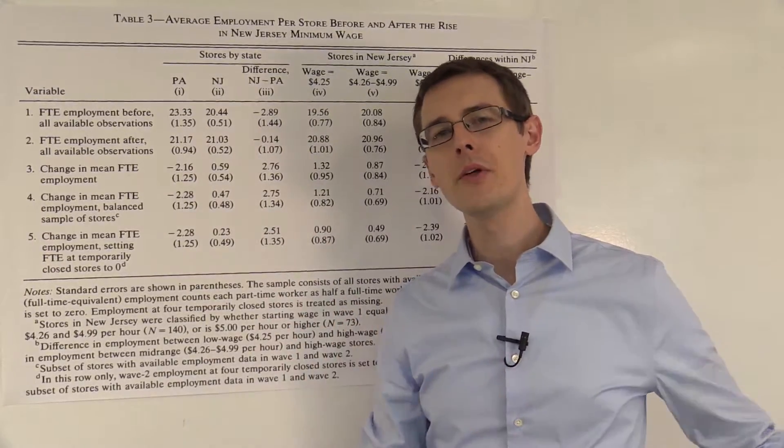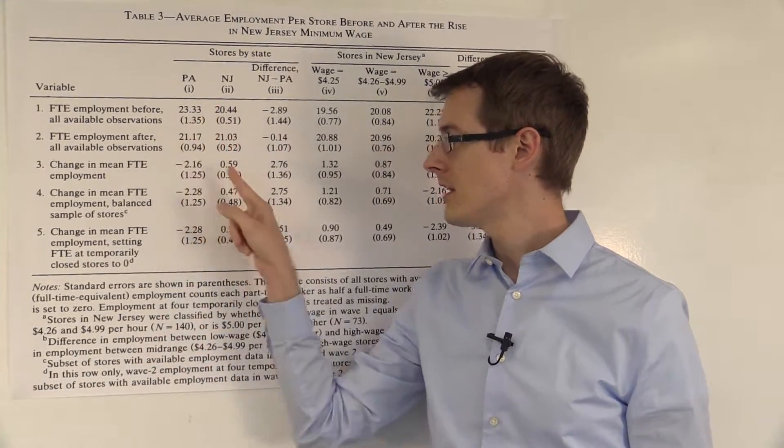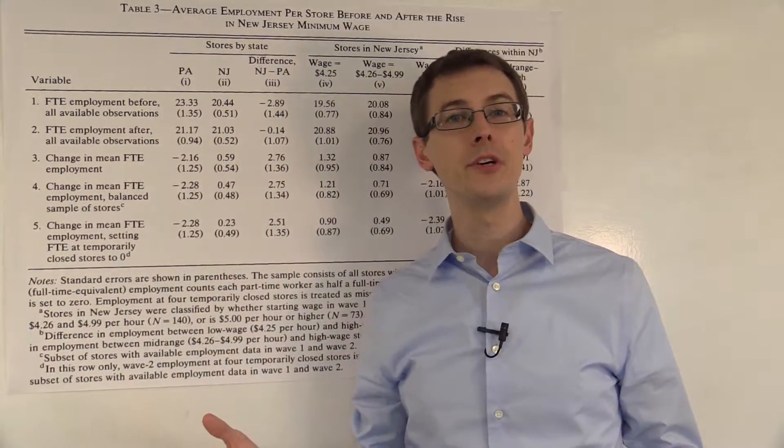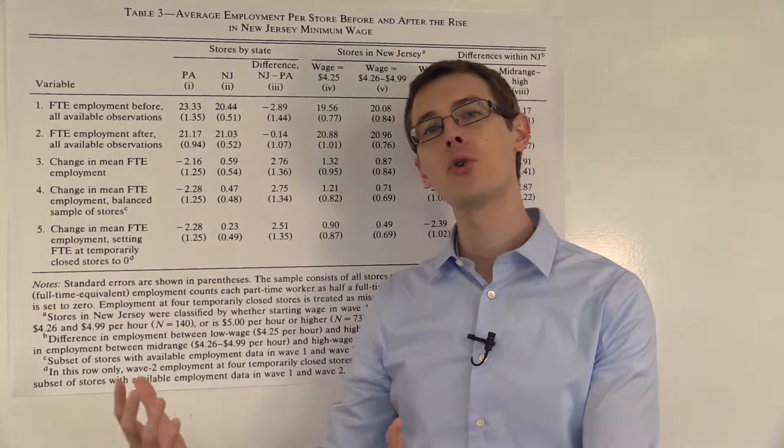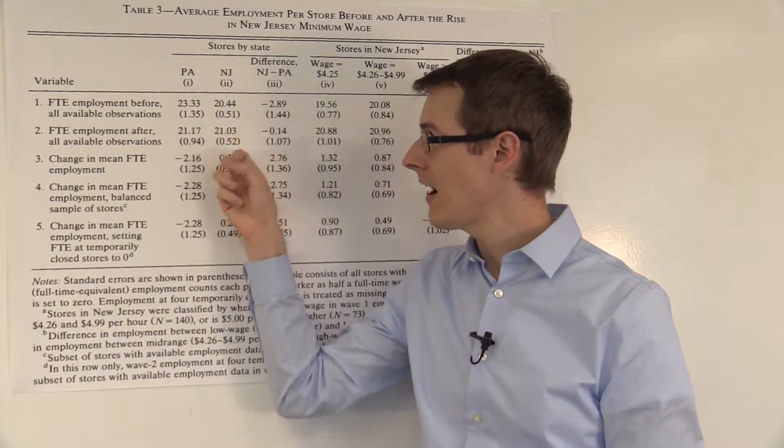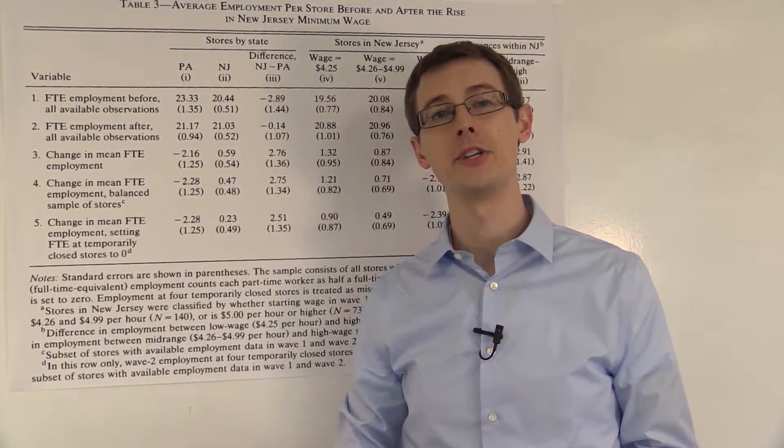But as we've discussed before, maybe there are some other trends, some other variables that are changing over time that would explain this difference of 0.59 workers. So what are we going to do? We need to find some control group that we can get the common trend from and extract out the common trend here so that we're left with just the effect of treatment, the effect of the minimum wage law.